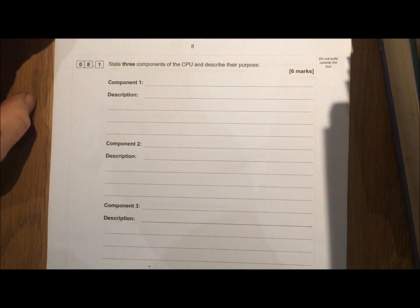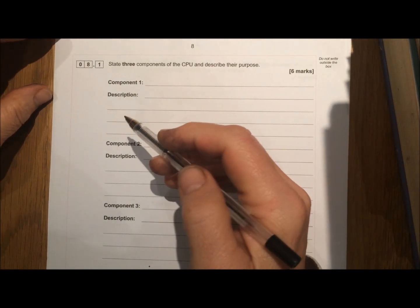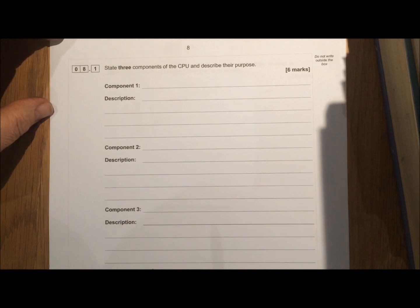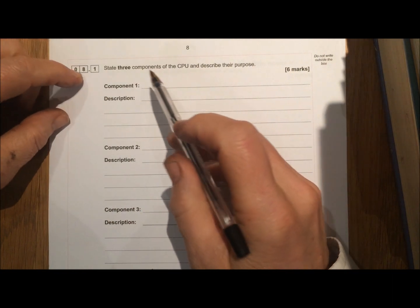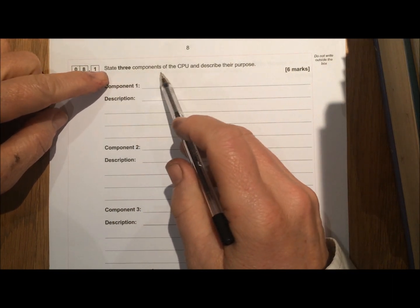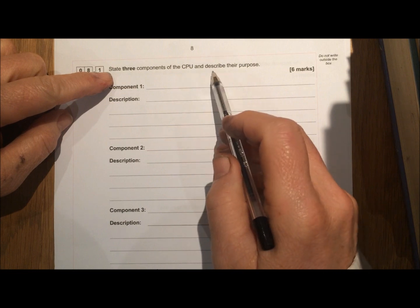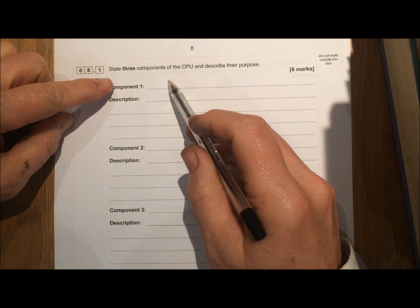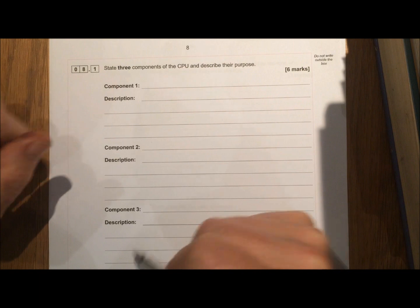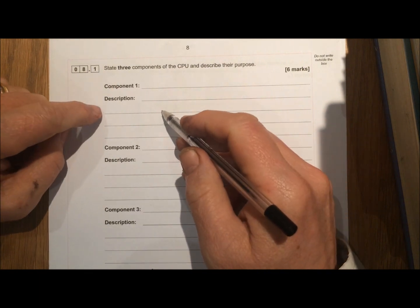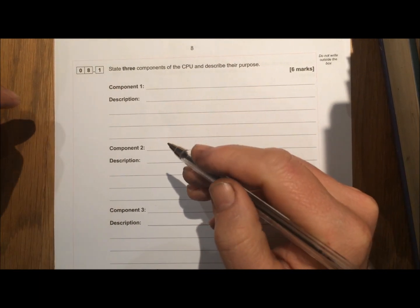And so we continue with question 8. Now we're starting to get into the longer questions now. So state three components of the CPU and describe their purpose. So there's one mark for stating the names of different parts and one mark for describing them.